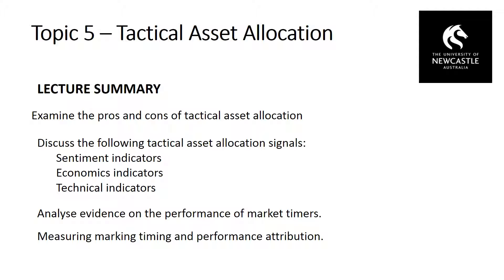The third problem with tactical asset allocation is taxes. Any investment strategy that results in frequent buying and selling not only incurs higher transaction costs but also incurs higher taxes. We're realising capital gains sooner, meaning we often won't be eligible for the 50% capital gains tax exemption received if we hold an asset for 12 months or longer. And because we're realising capital gains sooner, there's also a time value of money effect — we'll be liable for that tax today rather than in the future.